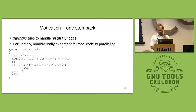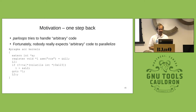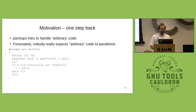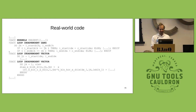As motivation — one step back — par loops tries to handle arbitrary code: it looks at the sequence of instructions and tries to figure out where there are loops and whether it can parallelize something. That's not surprising that arbitrary code can't always be parallelized. But real-world code doesn't look like that. Real-world code looks like this — for example, from some weather simulation.